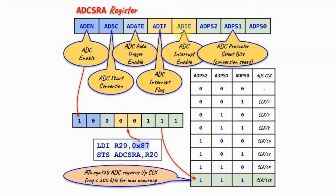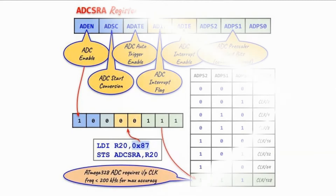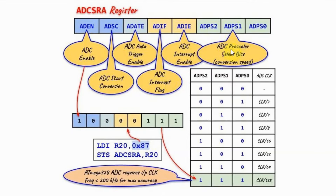The interrupt enable bit, if set, means the conversion will start based on an external interrupt; it will not be used in this video and is assumed 0. The three prescaler select bits determine the clock frequency of the ATD converter and therefore the conversion speed. A value of 001 gives a clock frequency of half the system clock, while a value of 111 gives an ADC clock frequency of clock divided by 128.